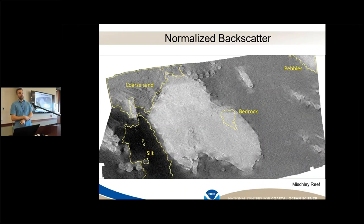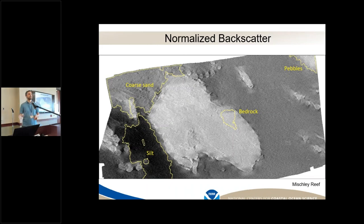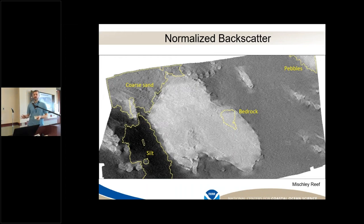We found backscatter was incredibly important for any substrate type map. Going back to Michele Reef in Lake Huron — this map shows backscatter where lighter colors show stronger reflection and darker colors show weaker reflection. There are four different areas highlighted with information about their substrate types from ground-truthing: silt, coarse sand, bedrock, and pebbles. You can see in the backscatter that these four areas are different based on their backscatter properties. When you look at elevation for these areas, you would see no difference — they're perfectly flat and you can't distinguish them. Backscatter was critical to discriminating among these four substrate types.